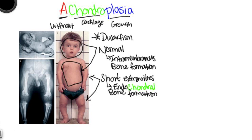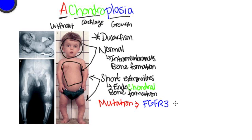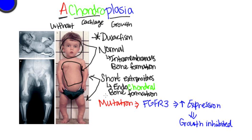These individuals have an activating mutation on the fibroblast growth factor receptor 3, so FGFR3 is increased in expression. You have too much of this receptor on the cell surface, and what your body does is respond by saying you're receiving too much of a growth signal, so it inhibits growth.